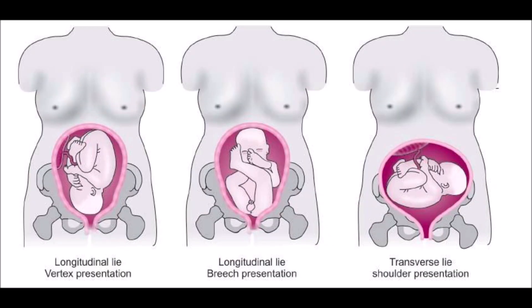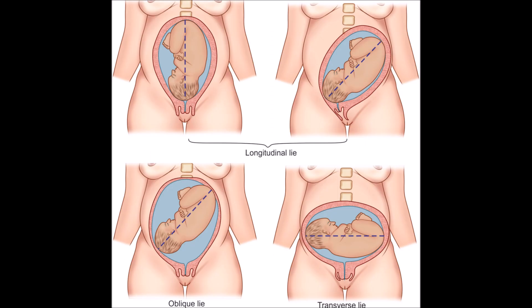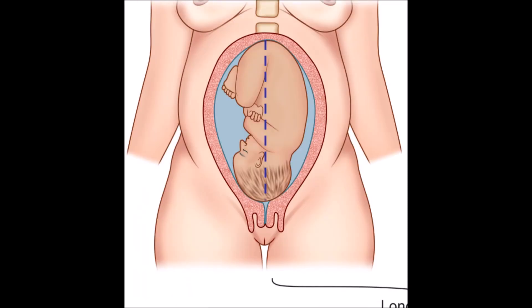Lie refers to the normal lever — it is longitudinal. As you can see here is the fetus's long axis, so it is a longitudinal lie.